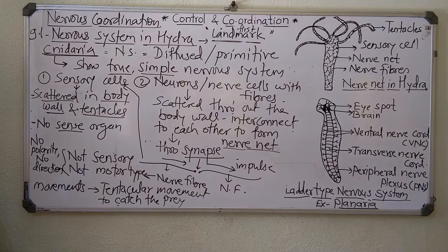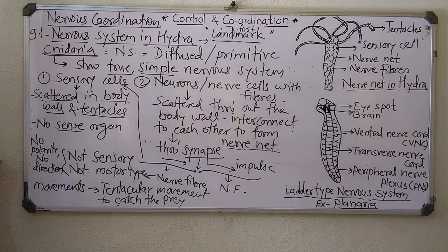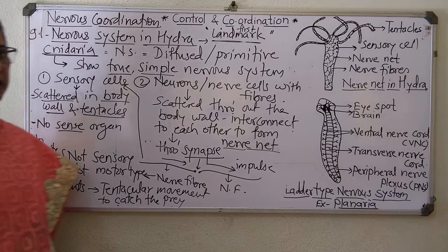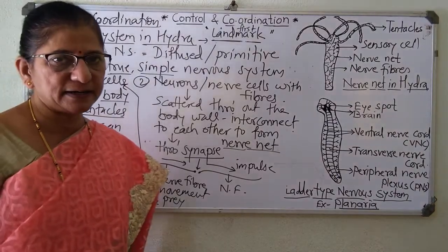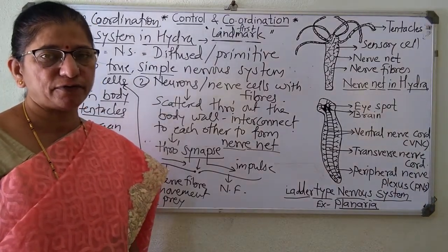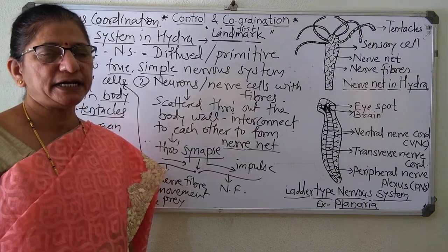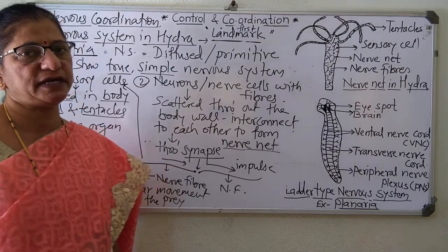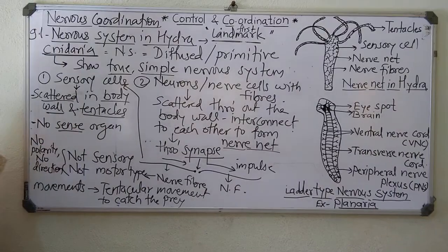For additional information, such a nerve net is also present in human beings, especially in the gut wall, as well as in Ctenophora. That is additional information — it is also present in the gut wall of human beings and in Ctenophora, which is another class of phylum Cnidaria.